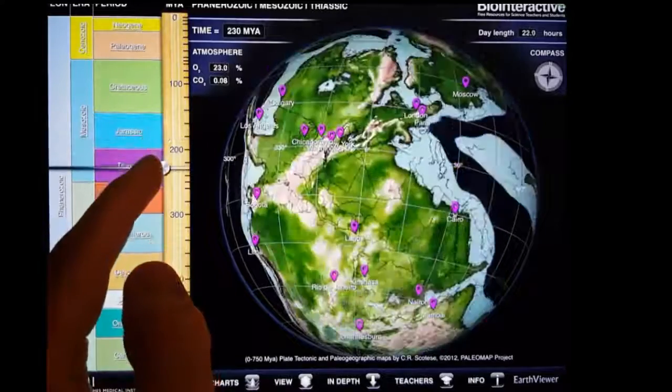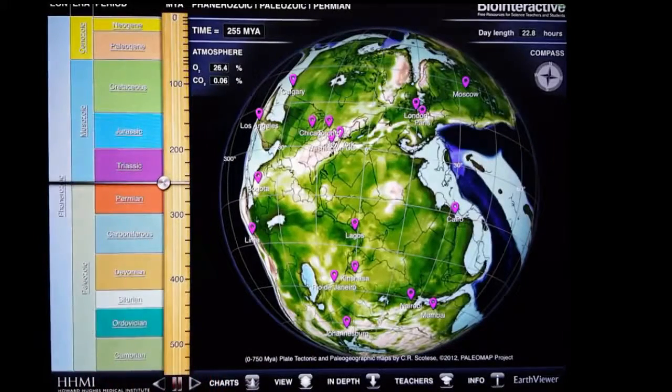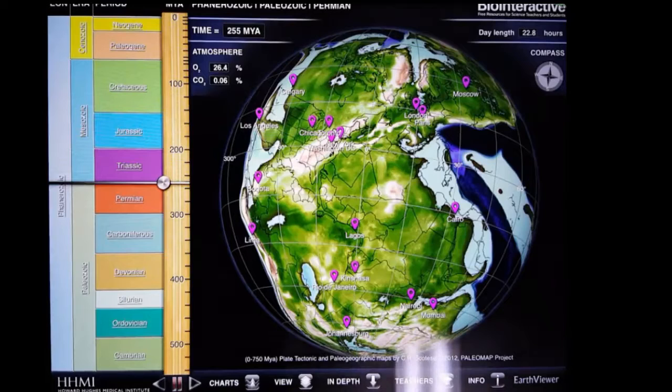As you drag the scale down, you can see the shifts that the Earth's landscape has had. Presently, I'm looking at when the Earth was comprised of the supercontinent Pangea.